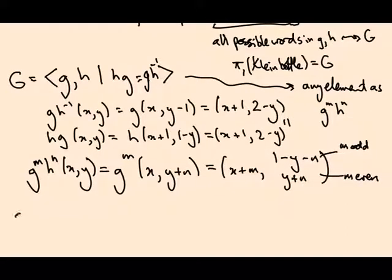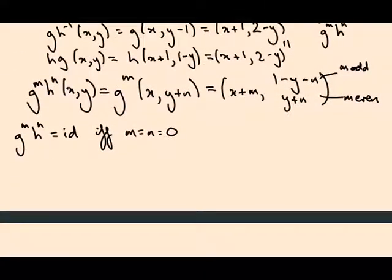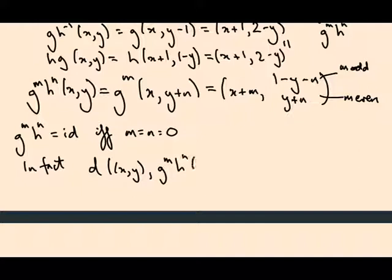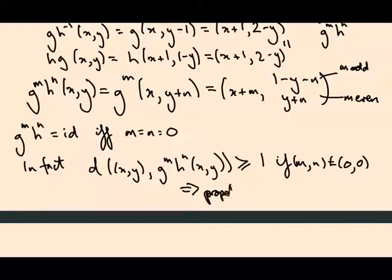So I claim that means G^M H^N is the identity if and only if M equals N equals zero, just by looking at this formula. And in fact, the distance between the point (x,y) and the point G^M H^N of (x,y), the claim is always bigger than or equal to 1 if M and N are not equal to zero. That tells you that it's properly discontinuous.